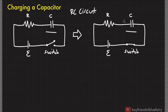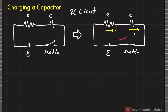To derive an expression for the amount of charge delivered to the capacitor as a function of time, let's use Kirchhoff's rule. Assume that the current flows this way. For the loop rule, let's draw an imaginary loop that goes this way. Using the loop rule, we have the following working equation.